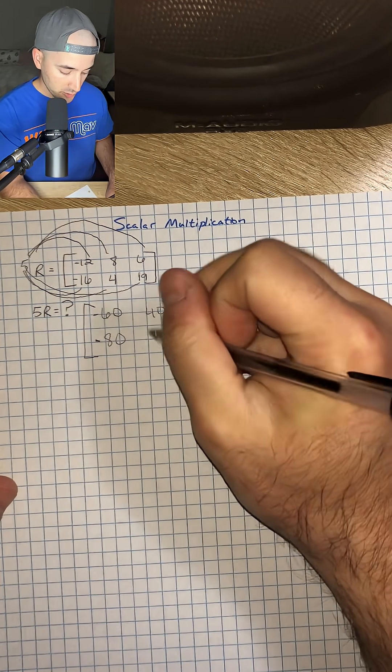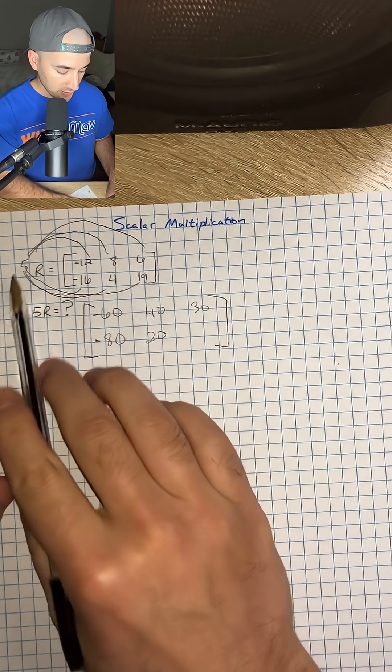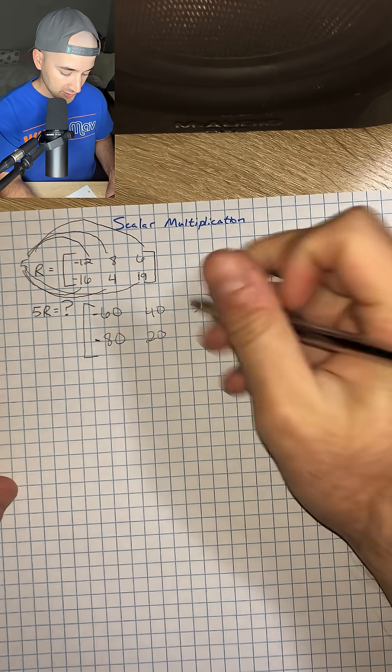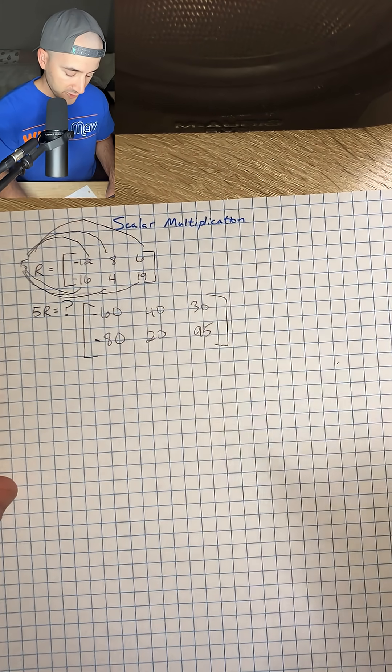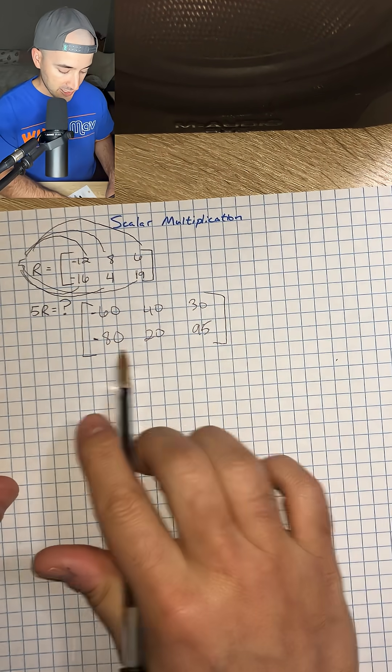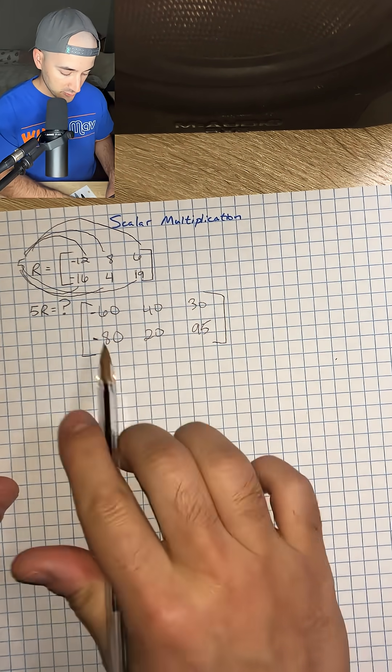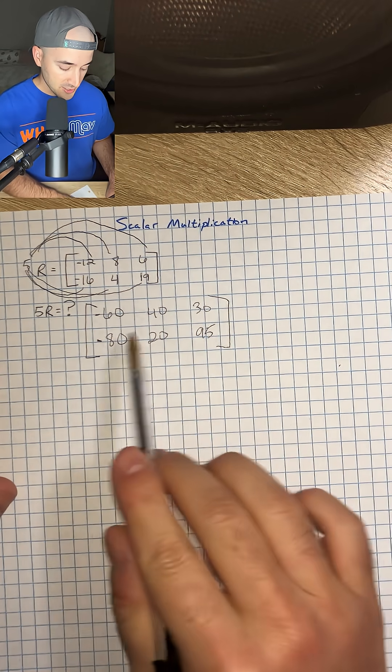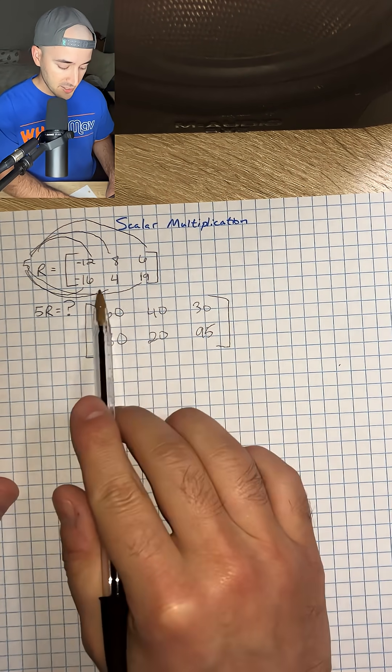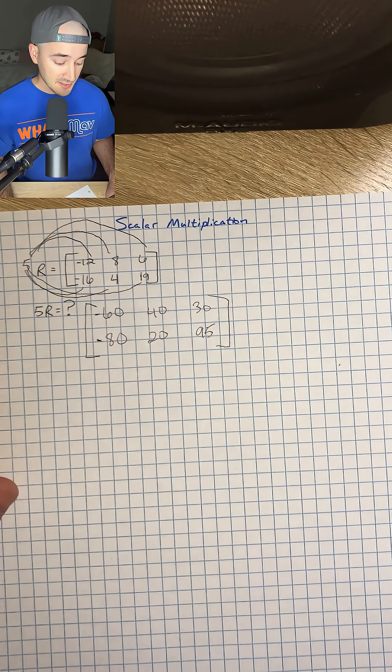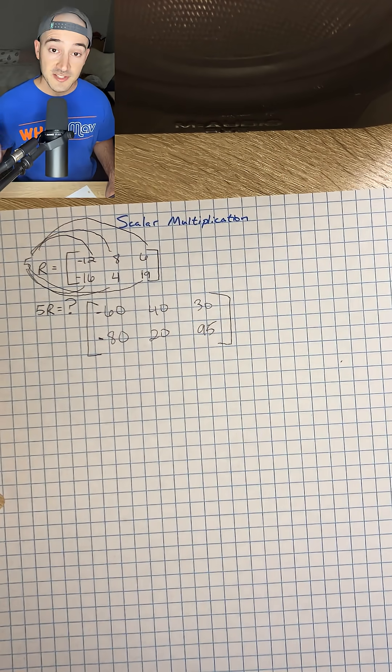5 times 4 is positive 20, and then 5 times 19 is positive 95. Now that we have all six spots filled, we distributed our 5 to all terms. That is all we have to do, and it's just that simple.